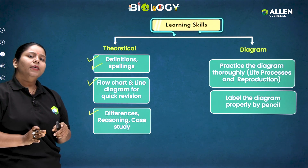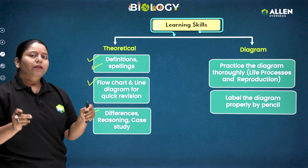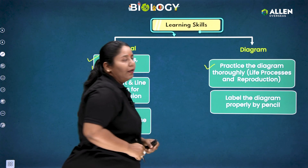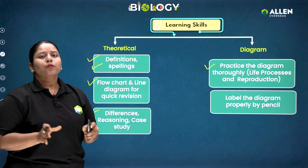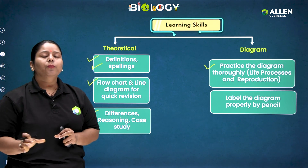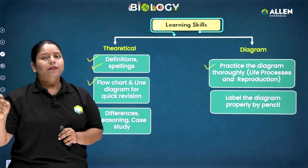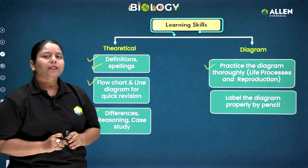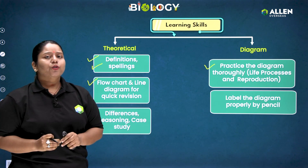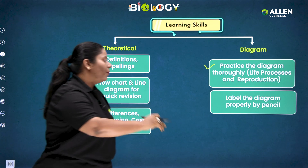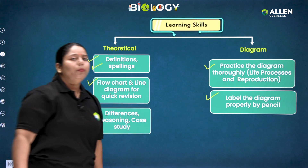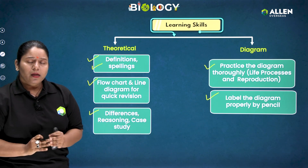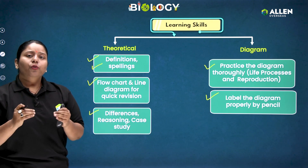The second aspect is diagrams. Practice diagrams thoroughly — the maximum diagrams in our syllabus come from two major chapters: Life Processes and Reproduction. Practice all diagrams given in your NCERT nicely, and whenever you are drawing a diagram, remember to label it properly by pencil.